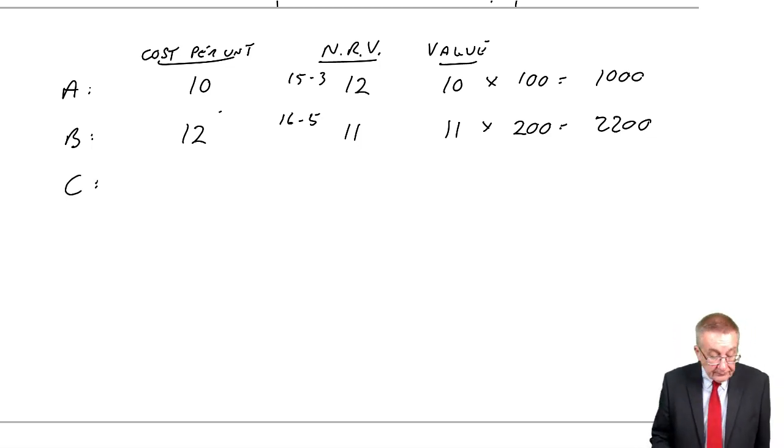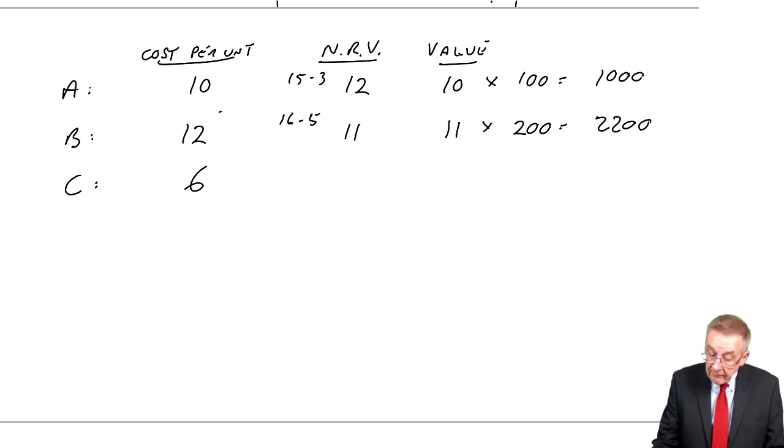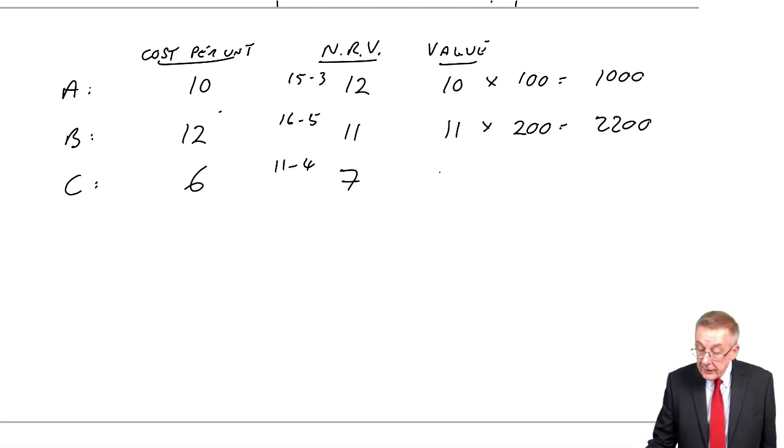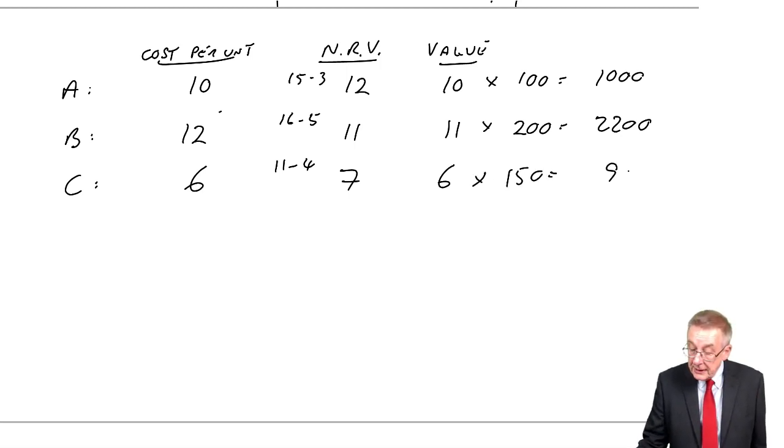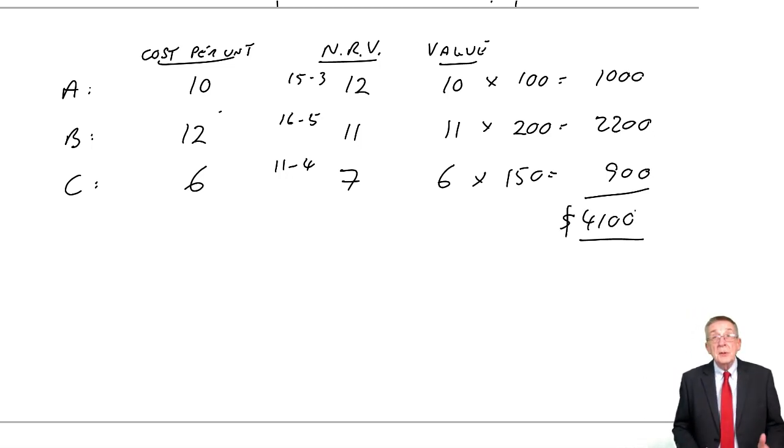And finally, C. There are 150 units. The cost so far is $6. The net realizable value, we'll sell them for $11, but there will be another $4 in costs before we sell them. The net realizable value is 7. Value at the lower of the two, which is 6, and for 150 units, which is 900. So, the total is what? Total value, $4,100. That's what you do your debits and credits on.